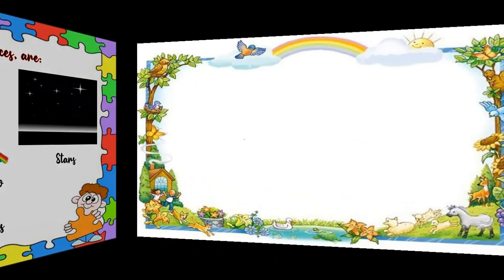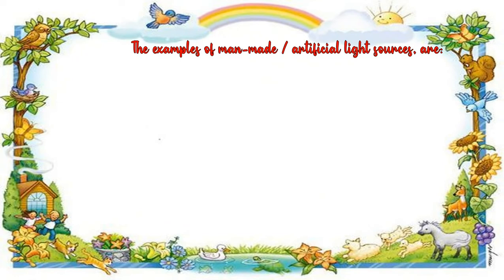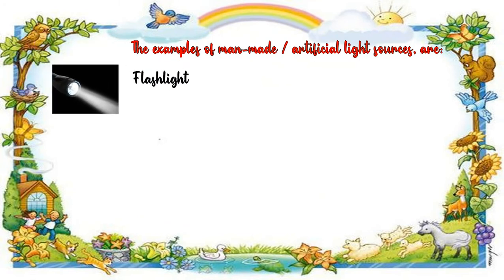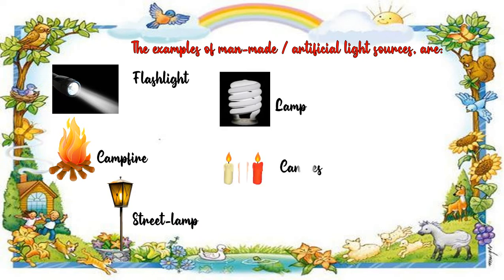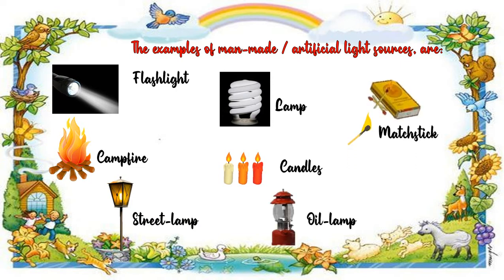Now let's continue to the examples of man-made or artificial light source. The examples are: flashlight, campfire, street lamp, lamp, candles, oil lamp, and glow stick. Contohnya antara lain: senter, api unggun, lampu jalan, lampu rumah, lilin, lampu minyak, dan korek api. Itu merupakan contoh-contoh dari man-made or artificial light source — sumber cahaya buatan manusia.